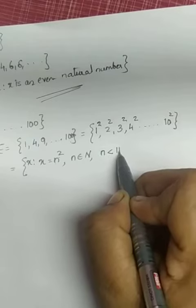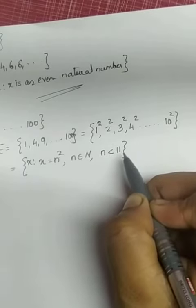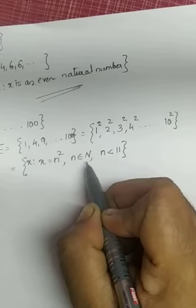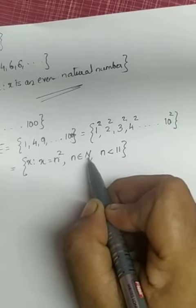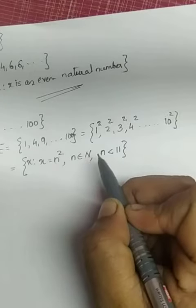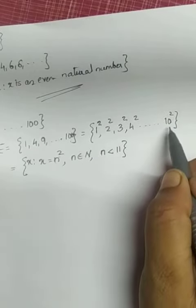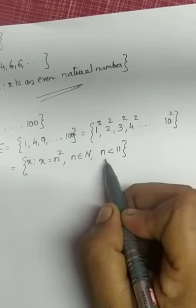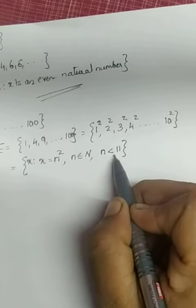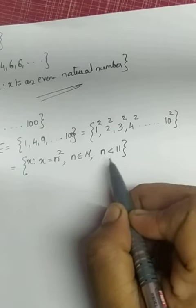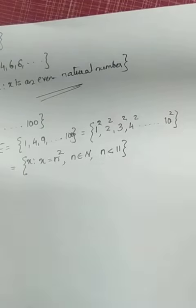Natural numbers are 1, 2, 3, 4, etc. - so many numbers are there. We need only numbers till 10, that is why we are restricting n. n < 11, or we can rewrite as n ≤ 10.